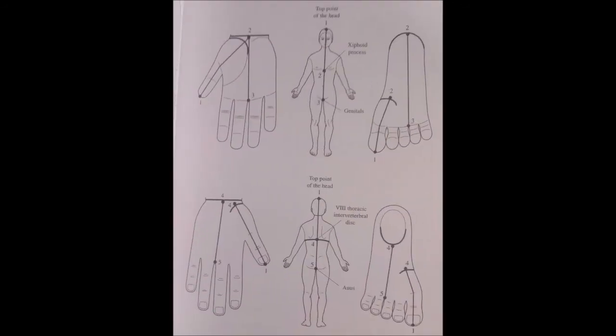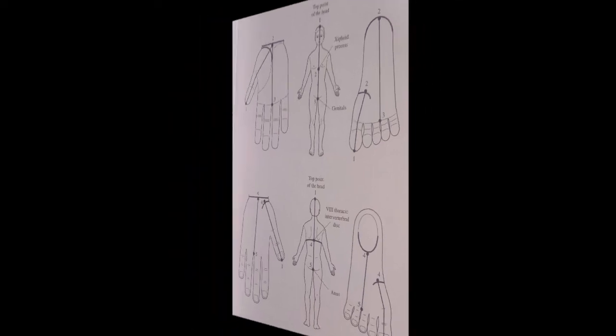The line of symmetry which passes along the center of the anterior and posterior surfaces of the body and divides it into the left and right halves serves as an important reference point during a search of correspondence points.